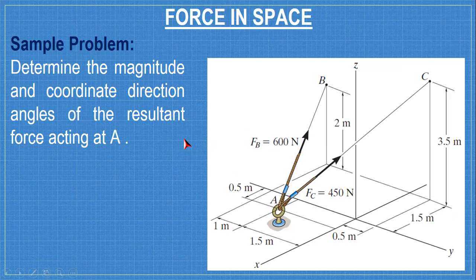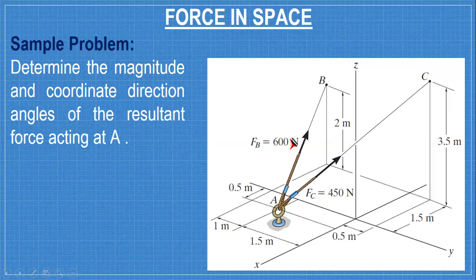Another problem: determine the magnitude and coordinate direction angles of the resultant force acting at A. So we have the scalar value of force AC, this one, and then AB 600. So start at A, that's the point where the forces intersect. At A is important that's the origin, so that you won't get the wrong sign for the components. If you start at C going to A, the sign of the components will be opposite. So you should start at A, A to C, A to B.